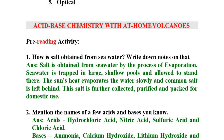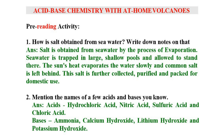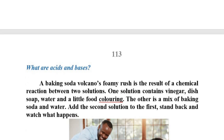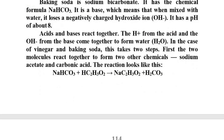Next topic: Acid-Based Chemistry with At-Home Volcanoes. Pre-reading activities: How is salt obtained from sea water? Because of the process of evaporation. Name a few acids and bases: acids include hydrochloric acid, nitric acid, sulphuric acid, and chloric acid. Bases include ammonia, calcium hydroxide, lithium hydroxide, and potassium hydroxide.